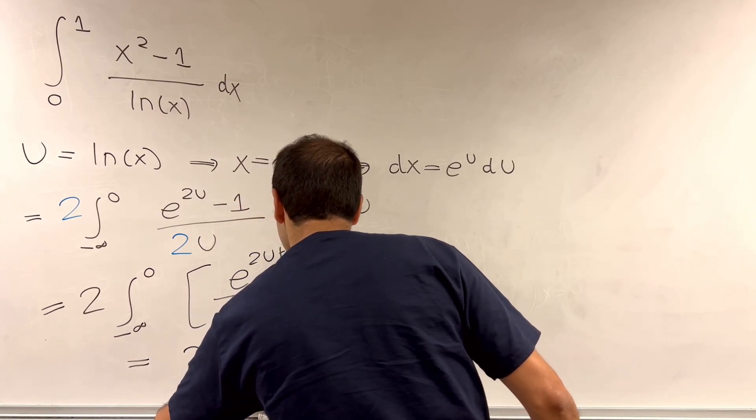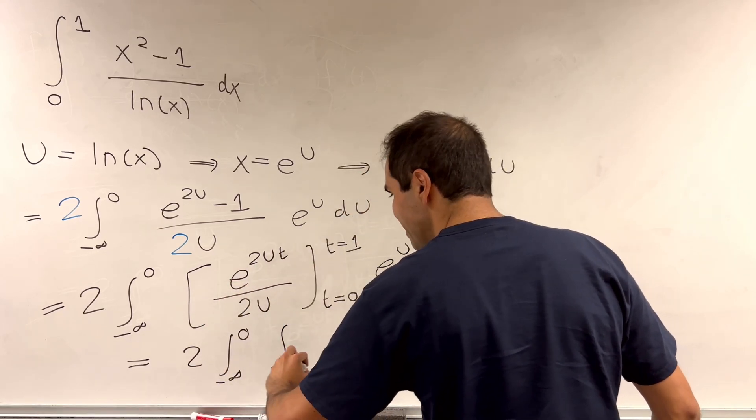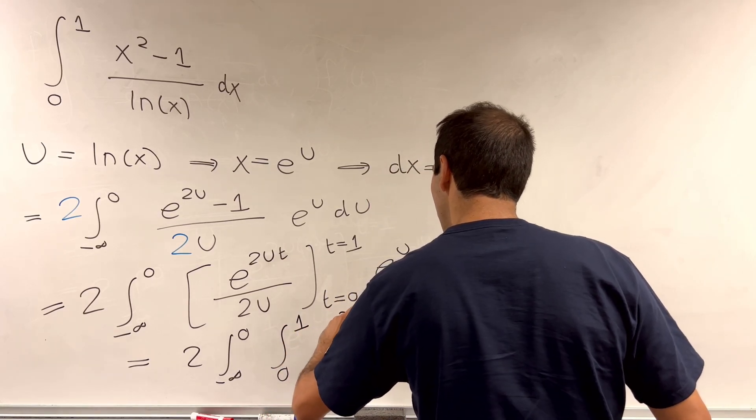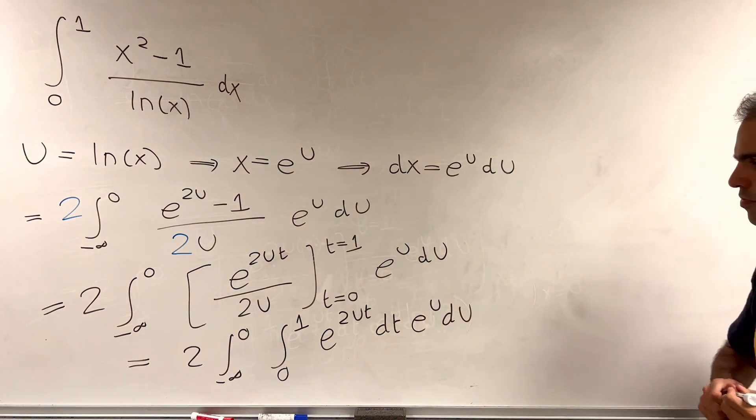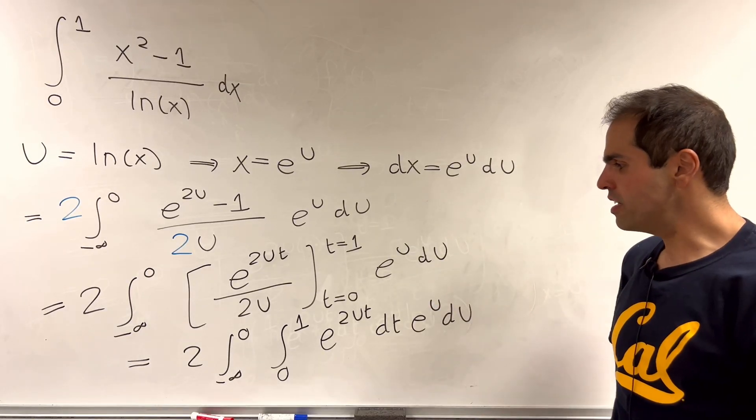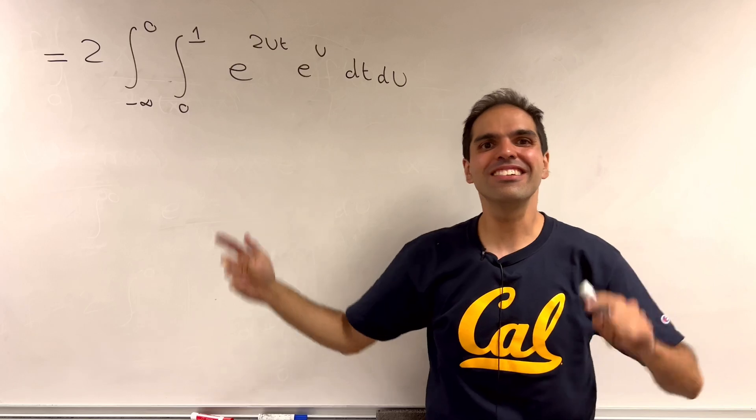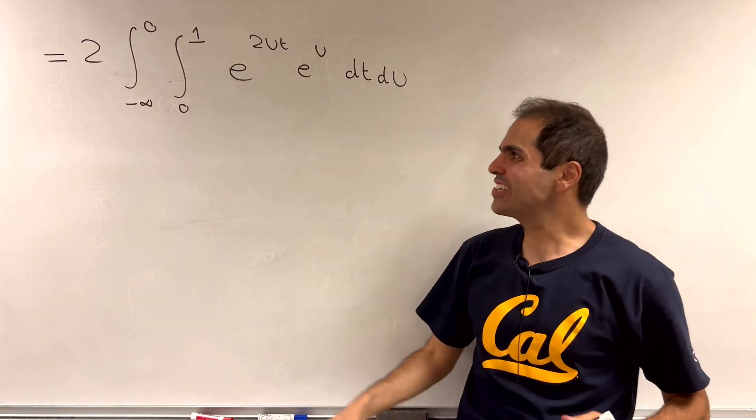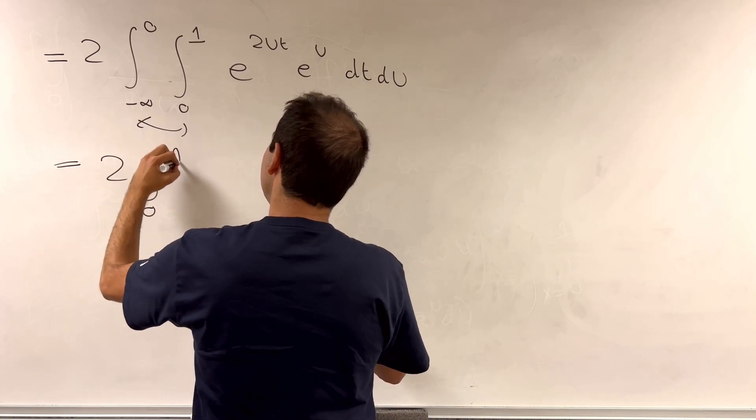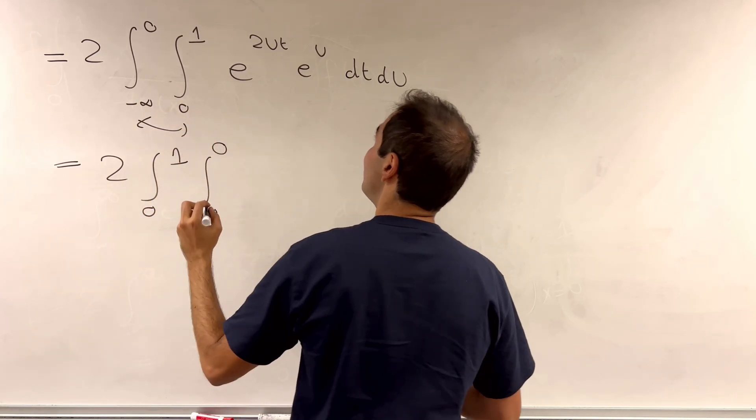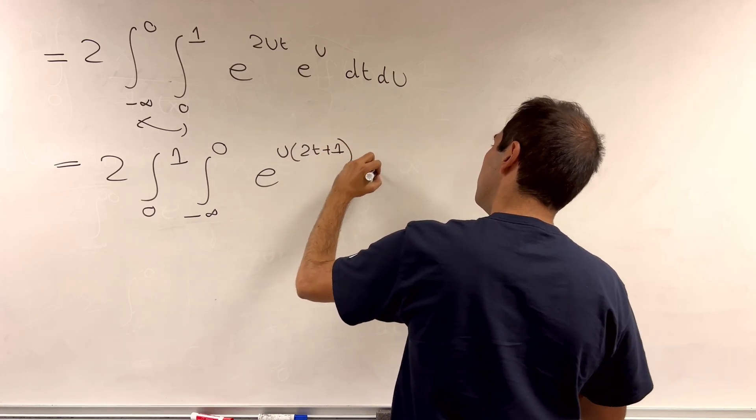And so this integral just becomes 2 times the integral from minus infinity to 0 of the integral from 0 to 1 of e of 2ut dt e of u du. And so we have transformed this into the following integral. And of course, what happens when we see this double integral? We just want to use the Fubini trick. So in particular, this is just the same thing as 2 times the integral from 0 to 1 integral from minus infinity to 0 of e of u times 2t plus 1 du dt.